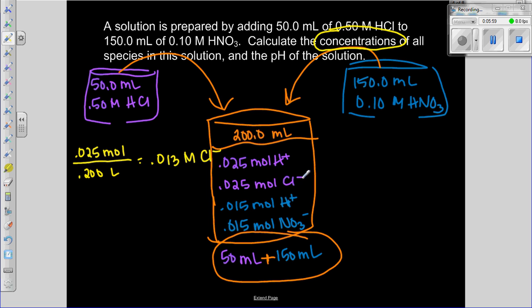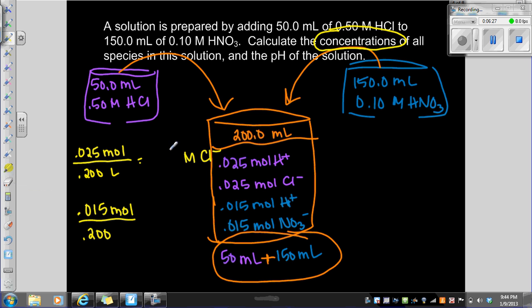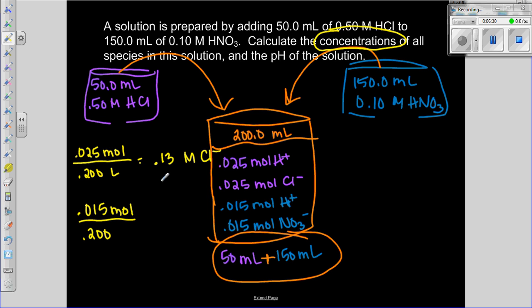Now I want to do nitrate: 0.015 moles of nitrate divided by 0.2. Let me correct that - 0.025 divided by 0.2 is 0.125, not what I said. For nitrate, 0.015 divided by 0.2 gives us 0.075 molar nitrate.